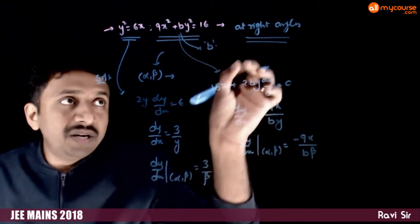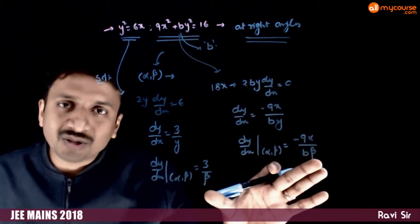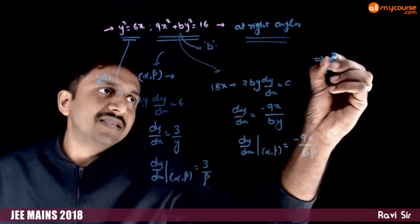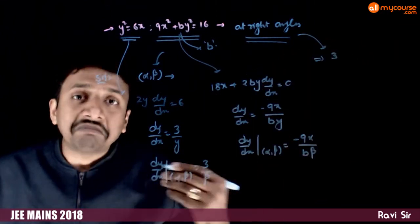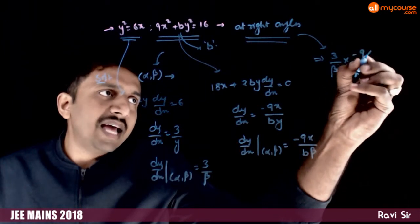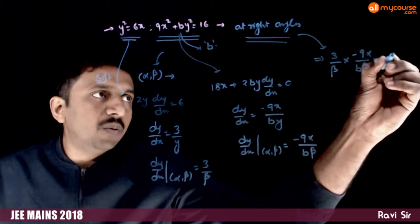Now at this point alpha comma beta, these two meet at right angles. That means these two slopes should have a product of minus 1. This implies right angle implies 3 by beta into minus 9 alpha by b beta has to be equal to minus 1.